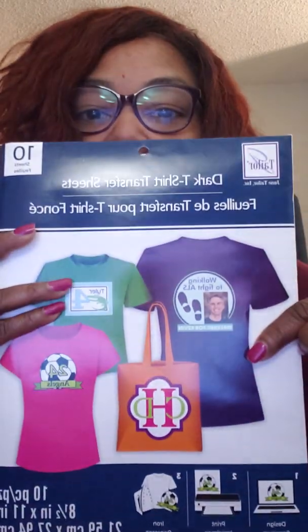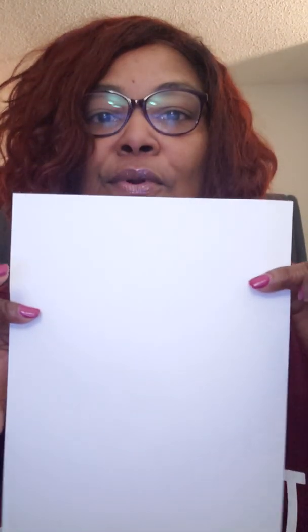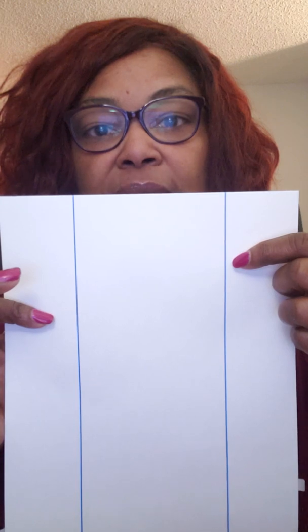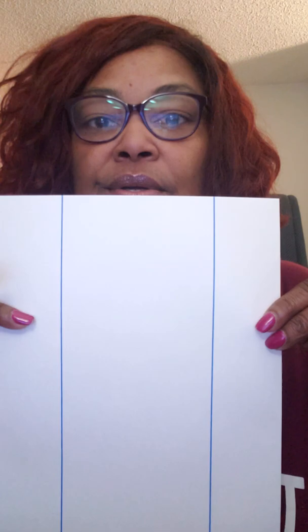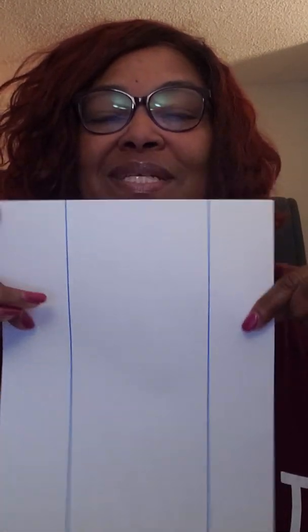You also have t-shirt transfers, and they come in for dark colors and light colors. Sometimes you can get a package that has dark and light together, but this is all dark. This is what that paper looks like — it's smooth and clear on one side, and on the back it has blue lines. These blue lines indicate that this is dark t-shirt transfer paper. If you throw away your packaging, just remember: blue is dark, red is light.